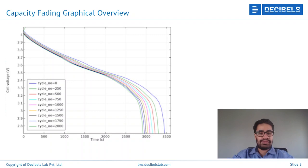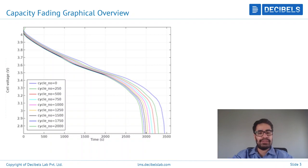The amount of time that the cell can be used for decreases as it is utilized more and more. You can see here that at around 1500 cycles, the usable time has come down to around 3000 seconds or a little bit less. With more and more usage, capacity goes on decreasing and permanent loss is incurred.